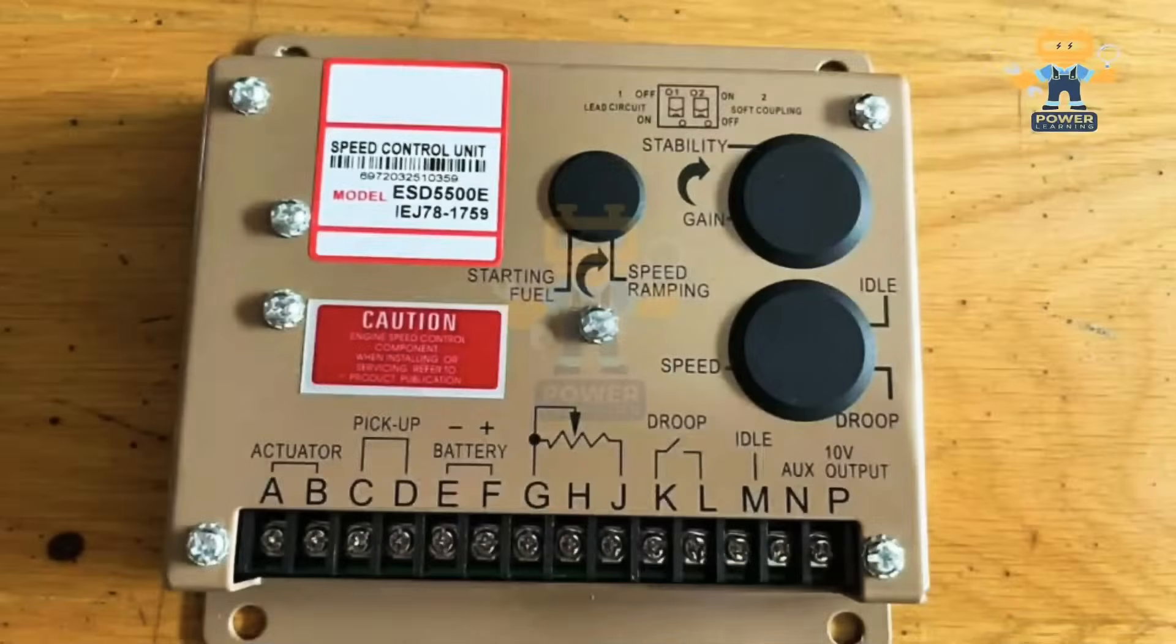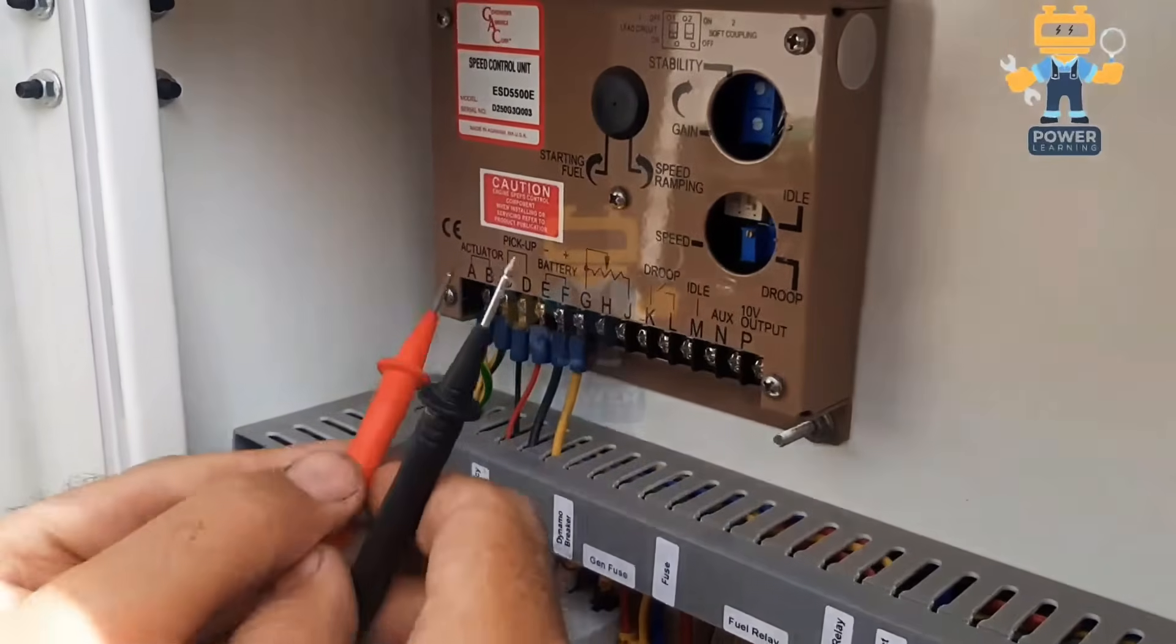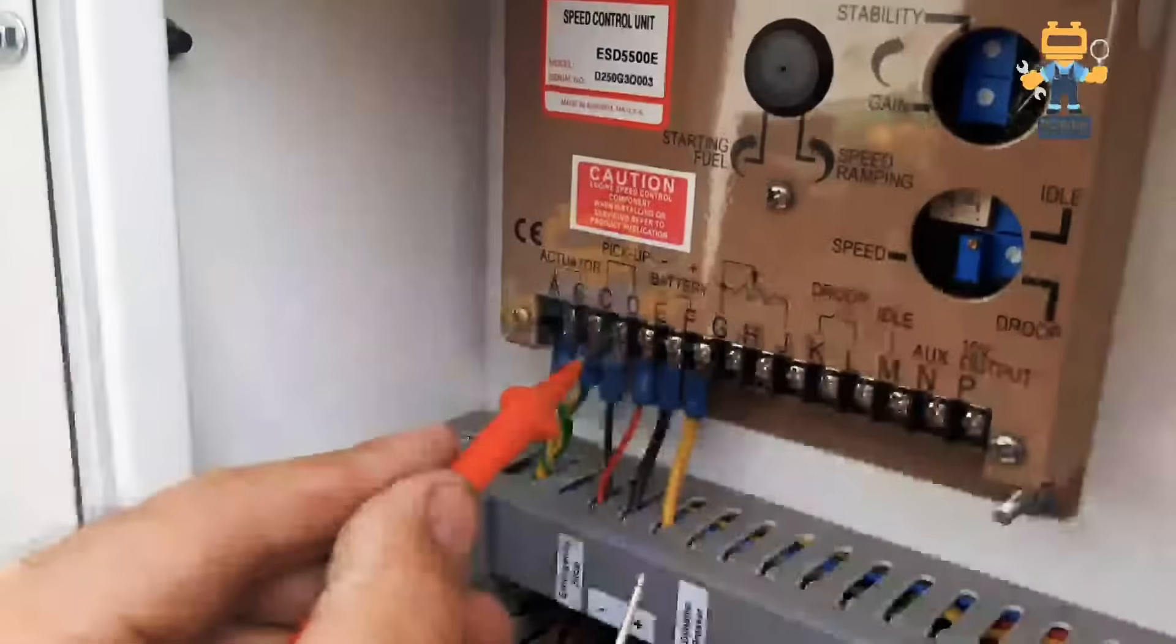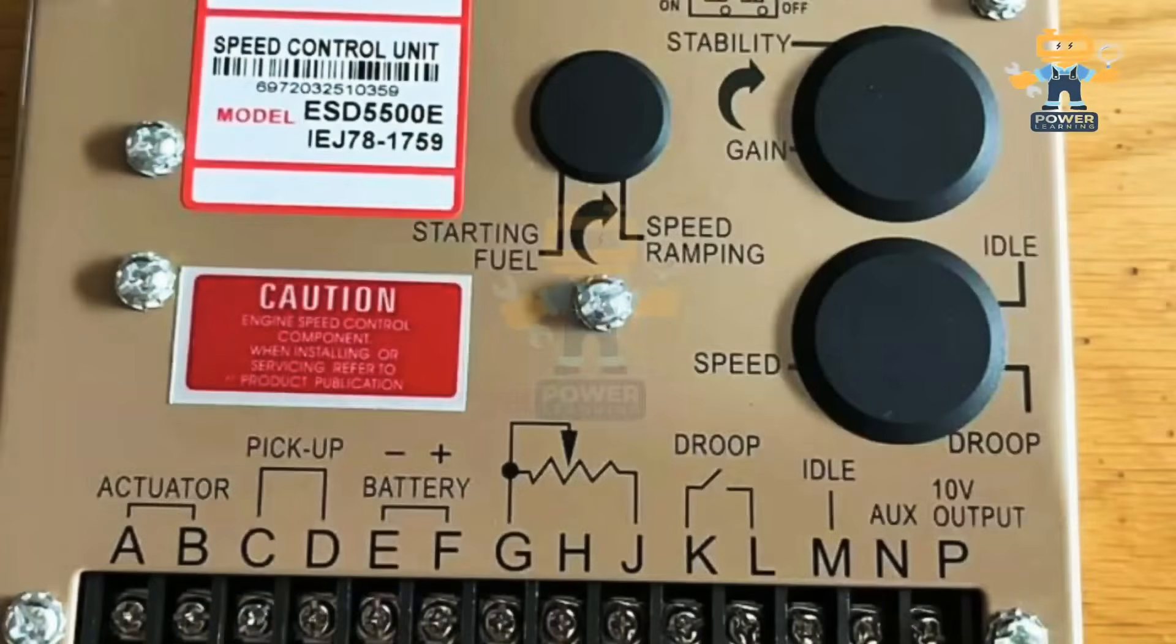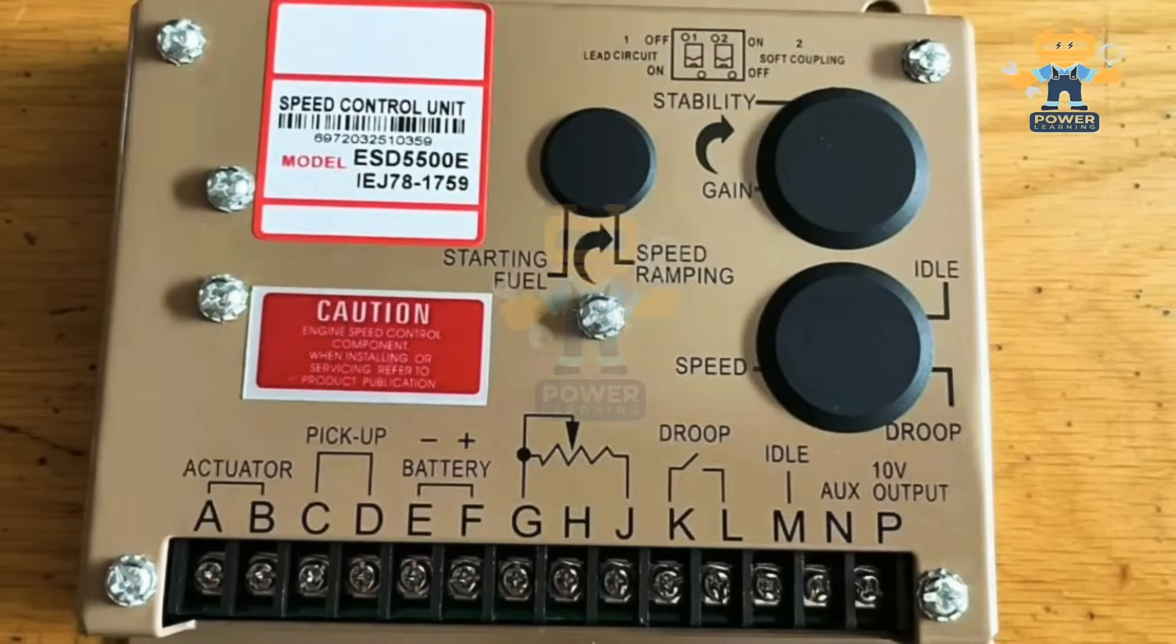Hello my dear friends, welcome back to Power Learning Channel. In today's video, we will talk about the speed control unit model ESD 5500E. This is a very common and familiar controller in the market, and this controller we are using in the generator for speed control of the engine.